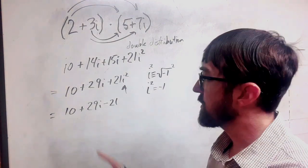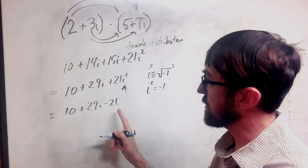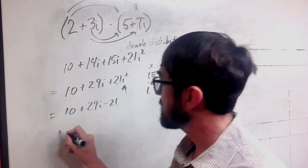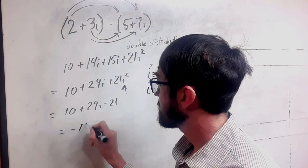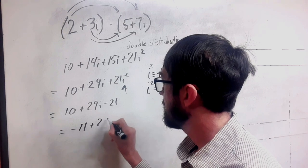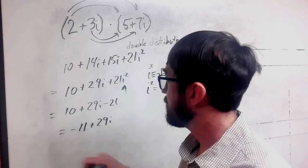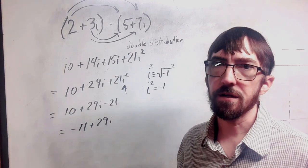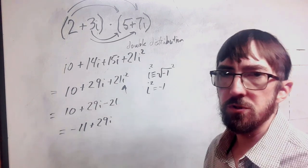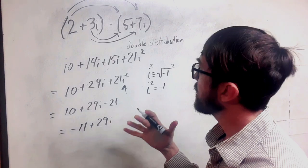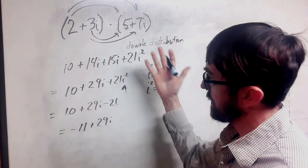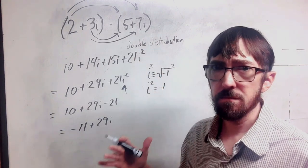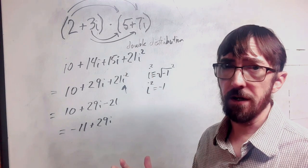Now that we've done this, we have two like terms. These are just real portions. So our final product is negative 11 plus 29i. So there's a lot more involved with the multiplication. But a lot of it is looking at what we can simplify.